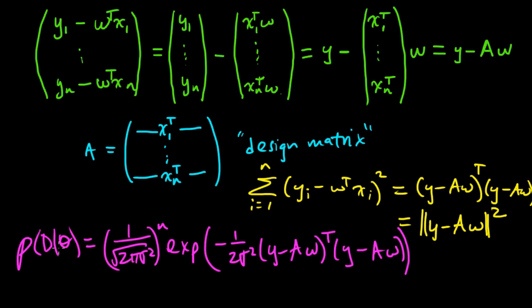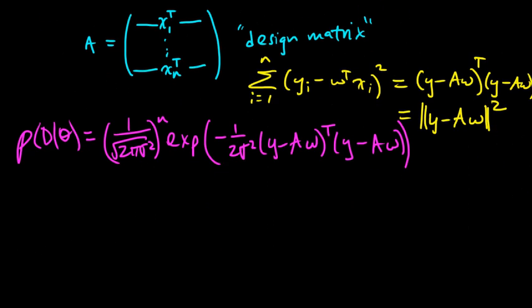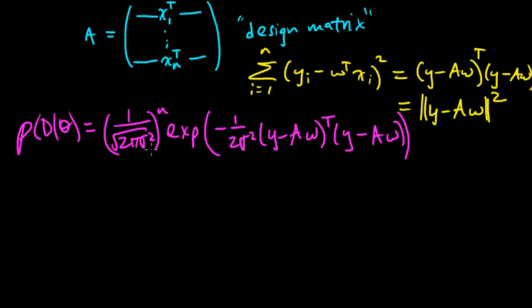So now, to maximize this guy, that's what we want to do. Maximizing this is equivalent to minimizing this part here. This part's the only part that depends on w. If you take the log, this is a constant, so that's not going to matter. This doesn't matter, and the minus makes it go from maximizing to minimizing.